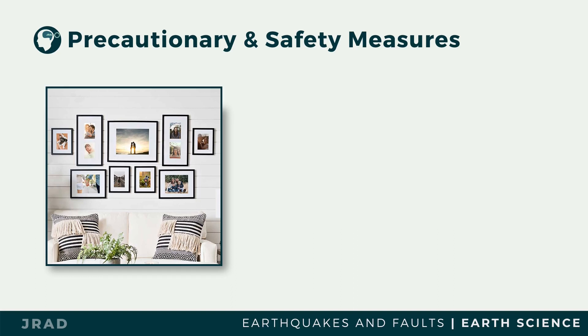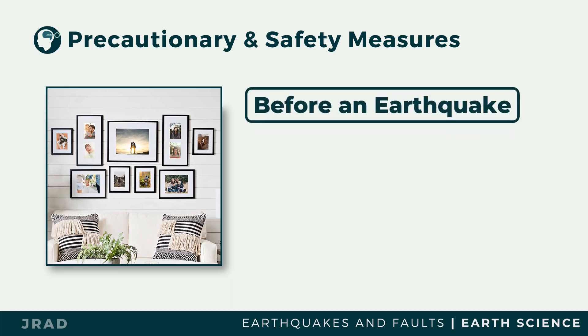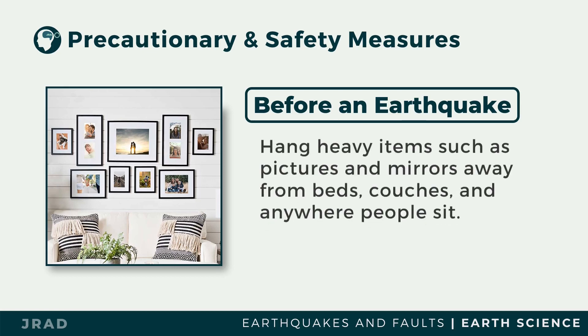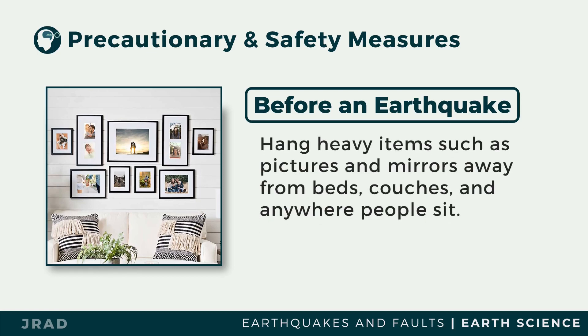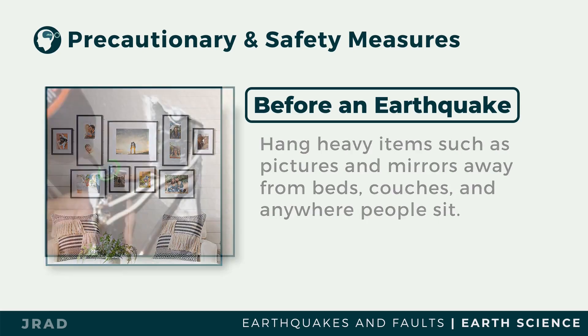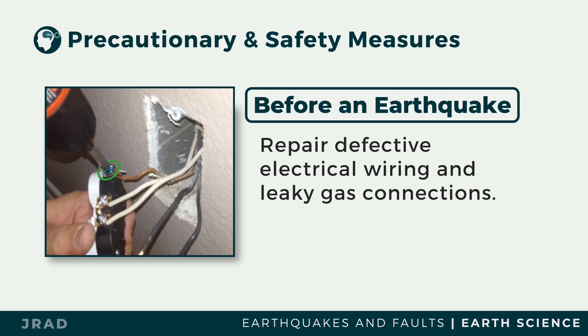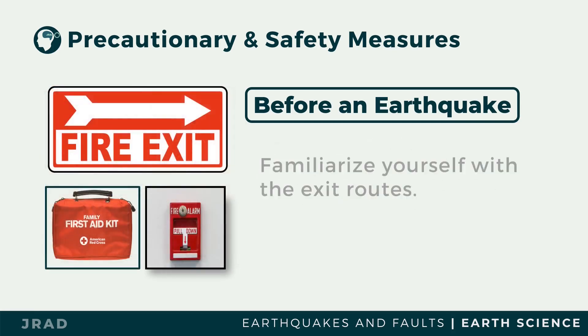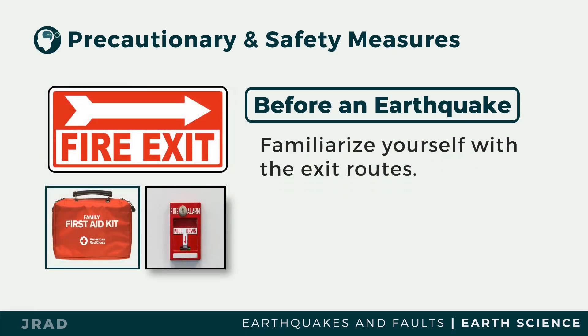The following are safety and precautionary measures before an earthquake: hang heavy items such as pictures and mirrors away from beds, couches, and anywhere people sit; repair defective electrical wiring and leaky gas connections, as these are potential fire risks; familiarize yourself with exit routes; know where the fire extinguishers, first aid kits, alarms, and communication facilities are located and learn how to use them beforehand; and conduct and participate in regular earthquake drills.